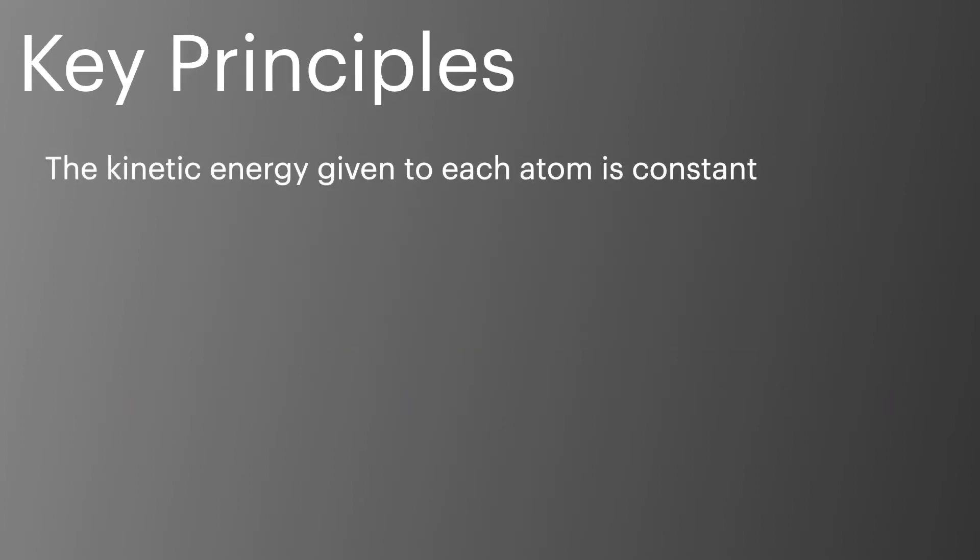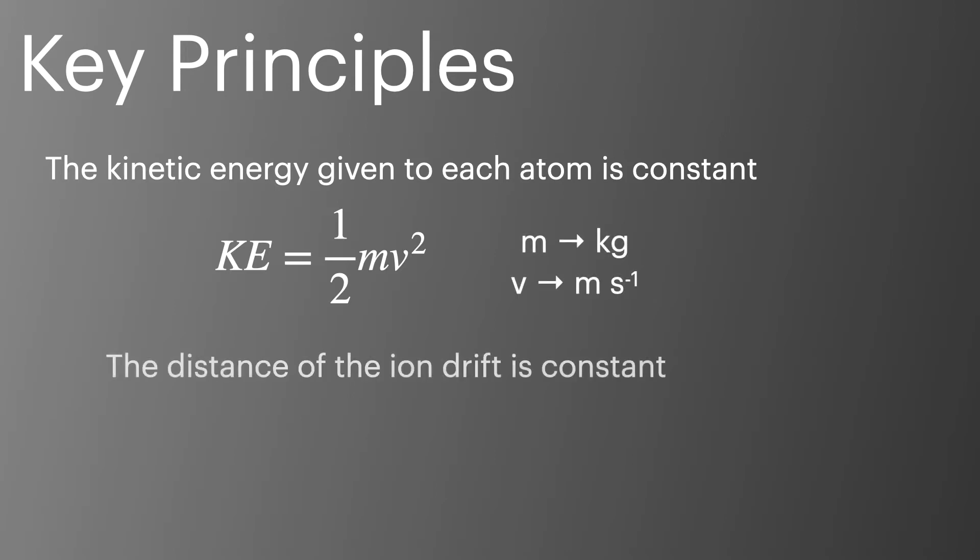Knowing that kinetic energy is constant for all ions in the mass spectrometer, we can calculate the kinetic energy using the equation KE equals 1/2 mv squared, making sure that we use mass in kilograms and velocity in meters per second. The distance of the ion drift or flight tube is also a constant. We can use the equation velocity equals distance divided by time to calculate the distance the ion travels or the time it will take to reach the detector. You'll have come across both these equations in your GCSE physics.